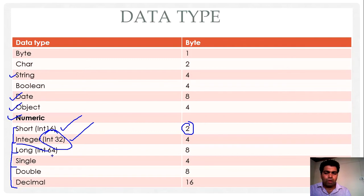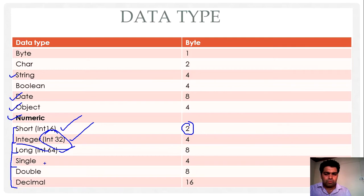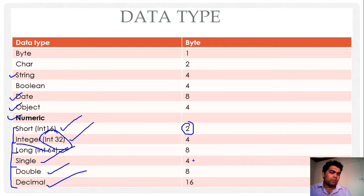The third numeric type is long, which is used to store data that is very heavy in size and range. To store a decimal or floating point number, we have three different data types: single, double, and decimal, having memory sizes of 4 bytes, 8 bytes, and 16 bytes respectively.